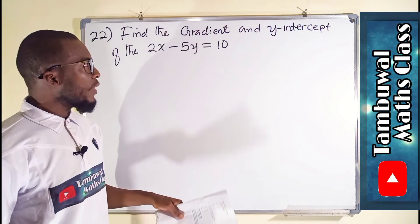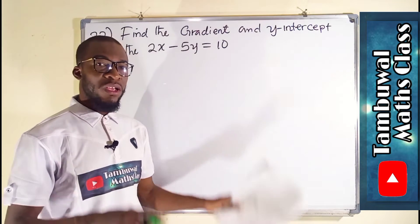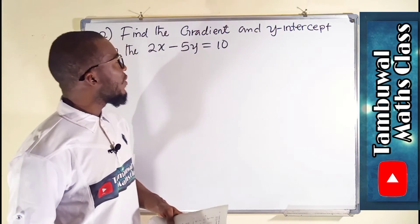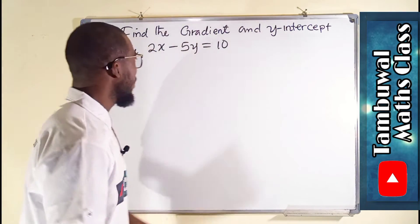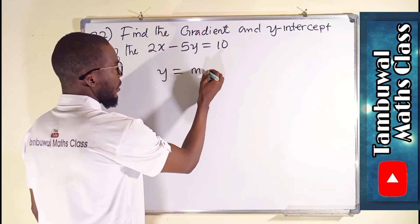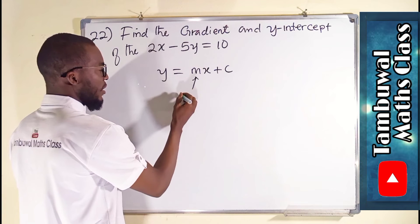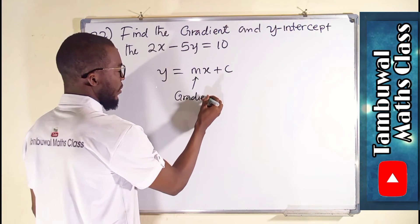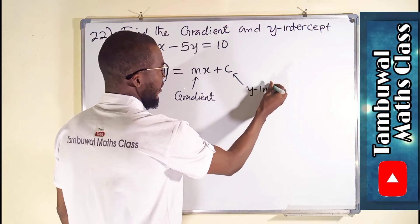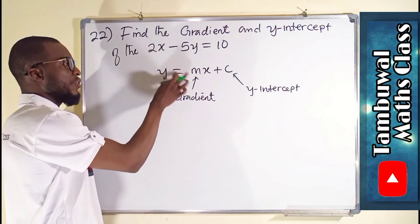So now, since some other information are not given, we can transform this equation into slope-intercept form because slope-intercept form of a linear equation consists of the gradient and the y-intercept. And the general form is y equals mx plus c, while m here is the gradient, while c here is the y-intercept. So we can transform this equation into this form.